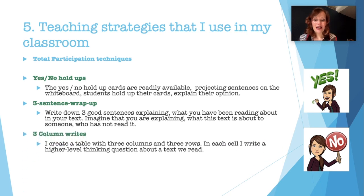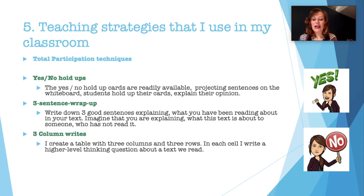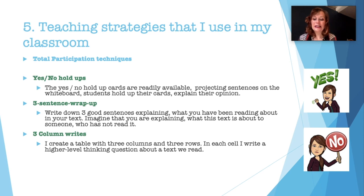Three Column Writes: I create a table with three columns and three rows. In each cell I write a higher level thinking question about the text we read. I give students time to fill in the table. Then students get up, find a partner, and talk about their answers in the first column. Once finished, they find a new partner and discuss the second column. Lastly, they share answers in the third column with yet another partner.